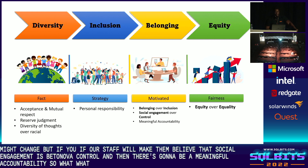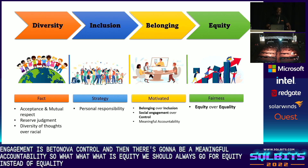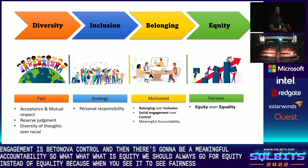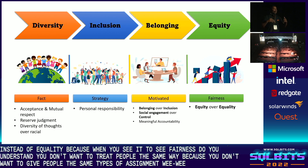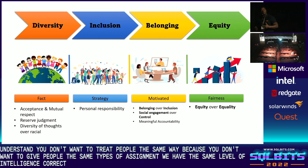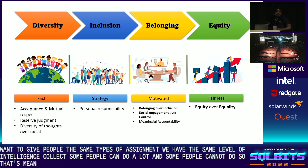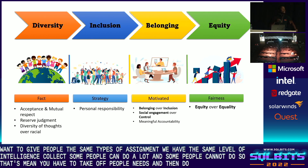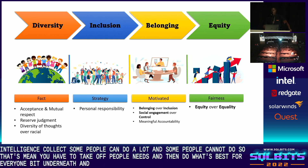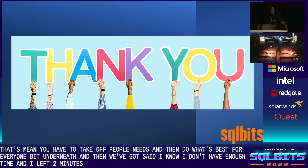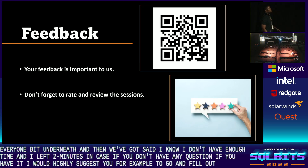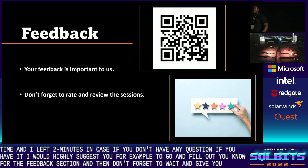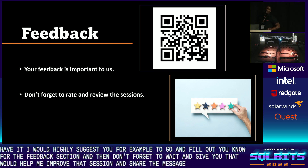We should always go for equity instead of equality, because equity means fairness. You don't want to treat people the same way or give everyone the same task or assignment — none of us have the same level of intelligence. Some people can do a lot, and some cannot. You have to think of people's needs and do what's best for everyone based on their needs. I know I don't have enough time, so I left three minutes for questions. Please go fill out the feedback section and don't forget to rate and review — that would help me improve this session. Thank you so much.